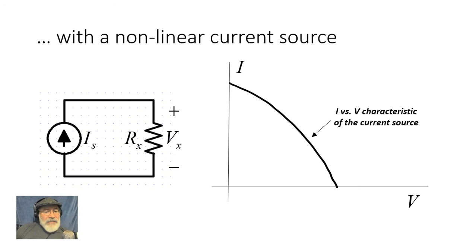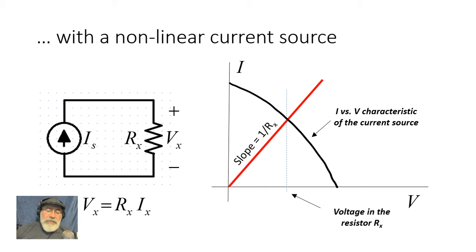And as before, the voltage Vx in the resistor and its currents are related to one another by Ohm's law. Graphically, given by the red line that has again the slope 1 over Rx. The intersection of the current source nonlinear characteristic and the linear characteristic of the resistor gives us what is the actual voltage in the resistor and what is the current in the circuit.